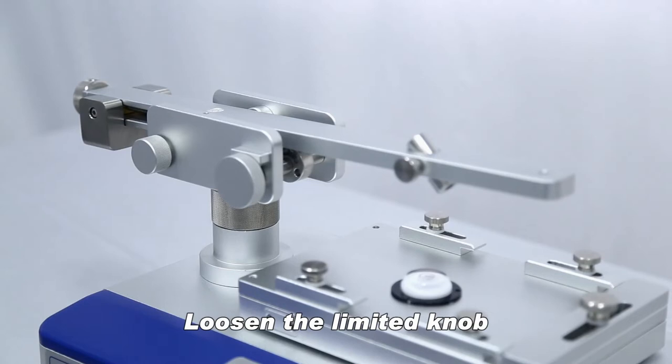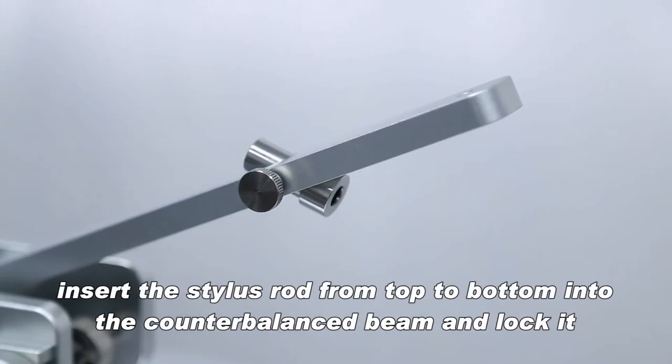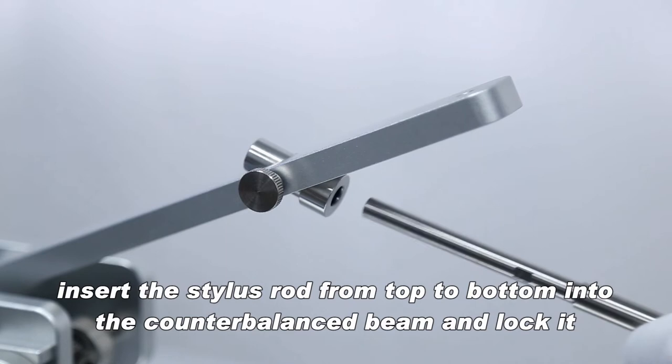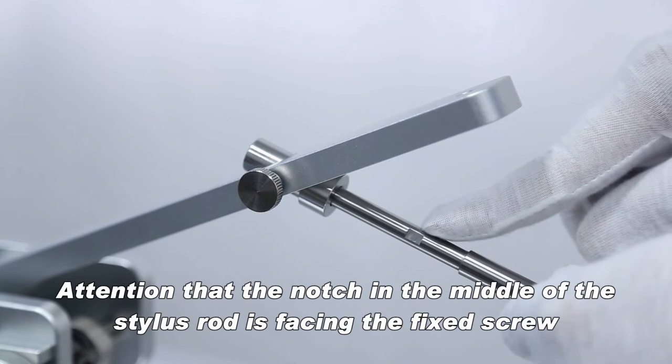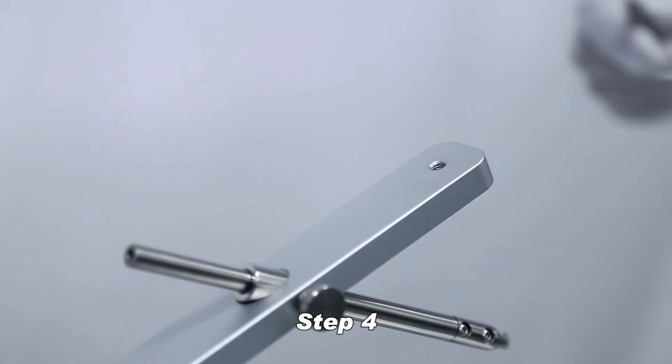Loosen the limited knob. Lift up the counterbalance beam and lock it. Insert the stylus rod from top to bottom into the counterbalanced beam and lock it. Attention that the notch in the middle of the stylus rod is facing the fixed screw. Install the weight holder and the gasket.